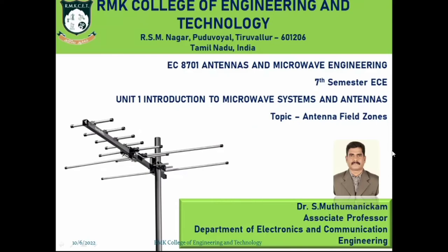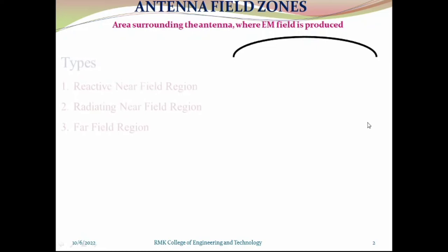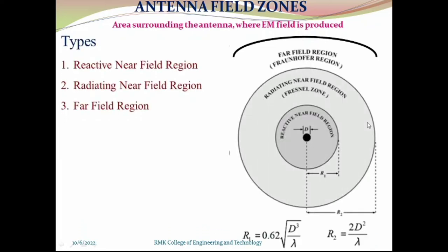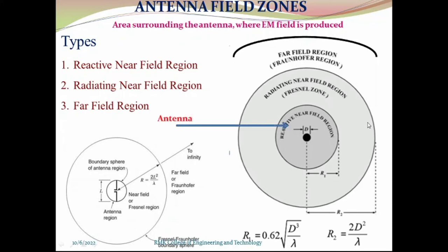Hello friends, today our topic is antenna field zones. What do you mean by antenna field zones? That is nothing but the area surrounding the antenna where electromagnetic field is produced. We have an antenna system at the middle, and around the antenna we have field components. That field component distribution range is called as antenna field zones.